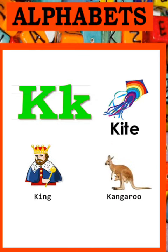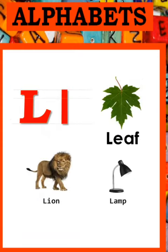K - K - Kite, King and Kangaroo. L - L - Leaf, Lion and Lamb.